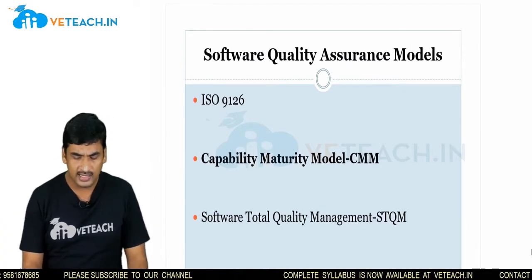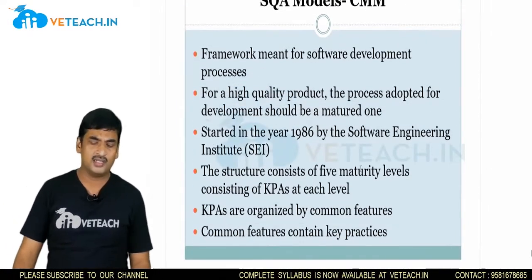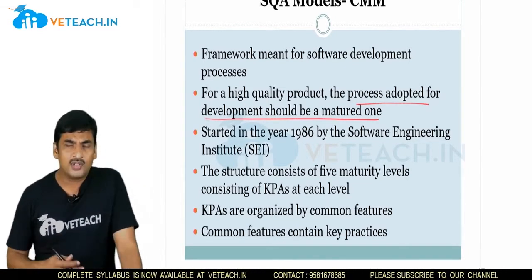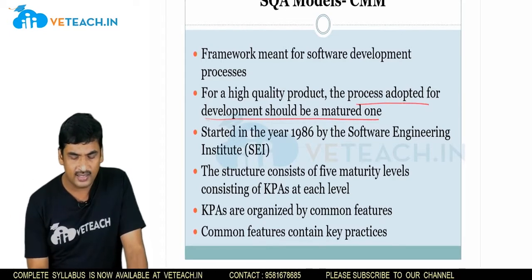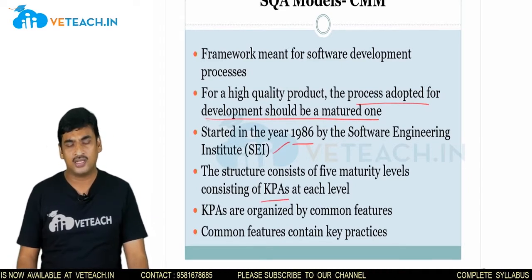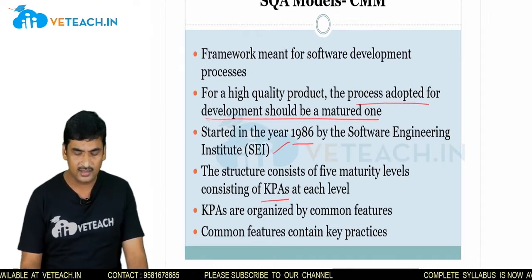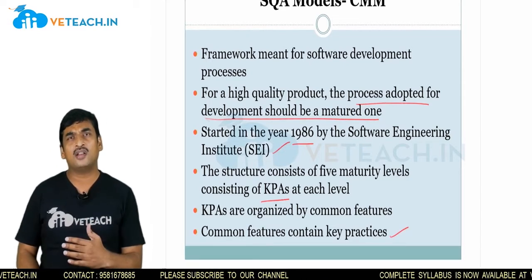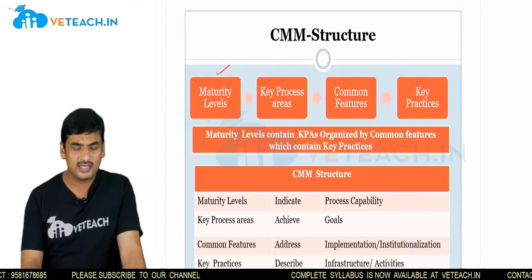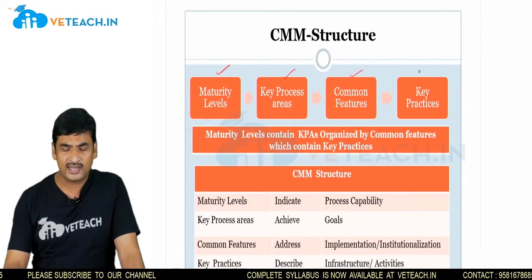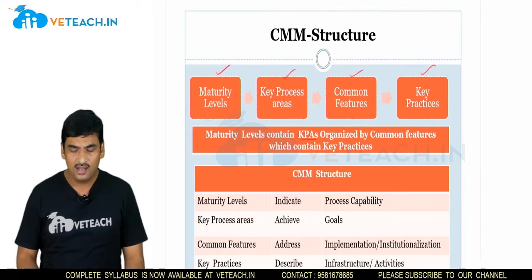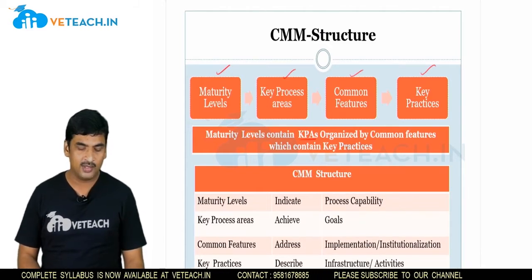The Capability Maturity Model (CMM) is a framework for software development processes. For a high-quality product, the development process must be a matured one. This is a five-level framework developed in 1986 by SEI (Software Engineering Institute). They formulated certain key process areas to focus on at each level, organized by common features with key practices. The structure of CMM includes maturity levels, key process areas, common characteristics, and practices followed at each level.